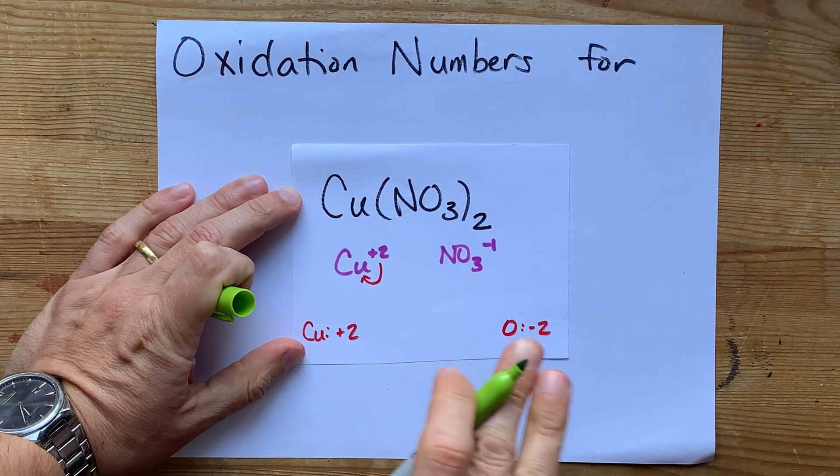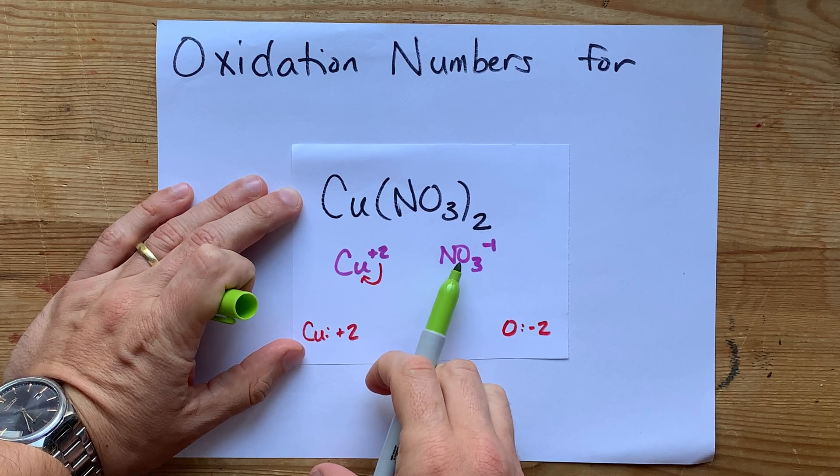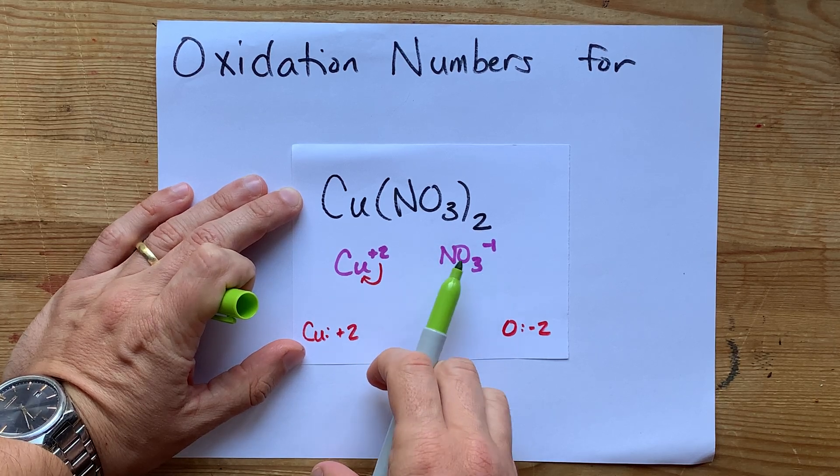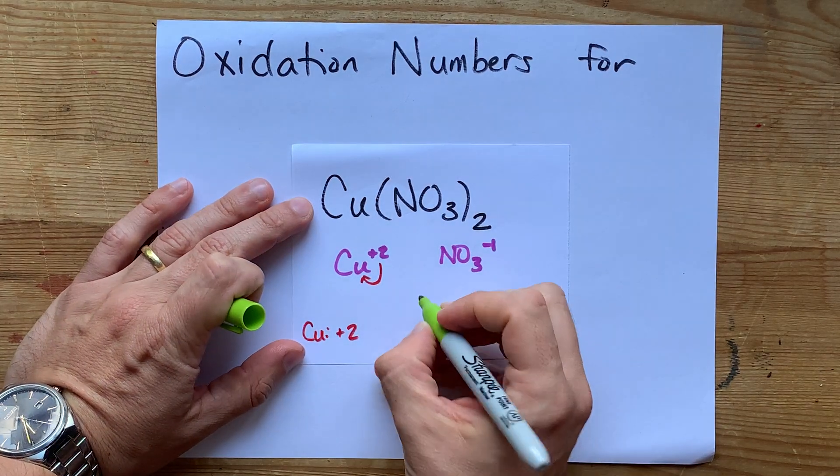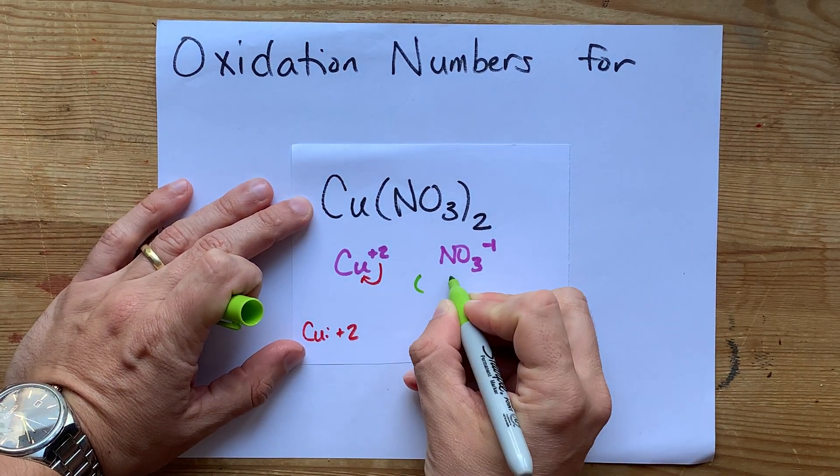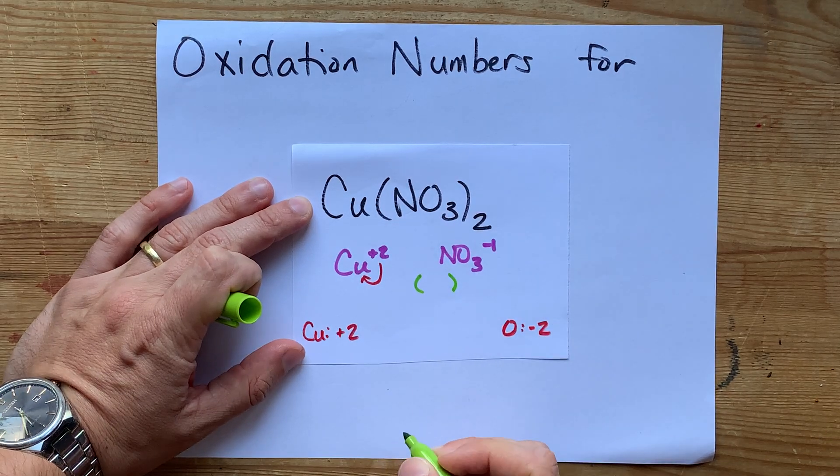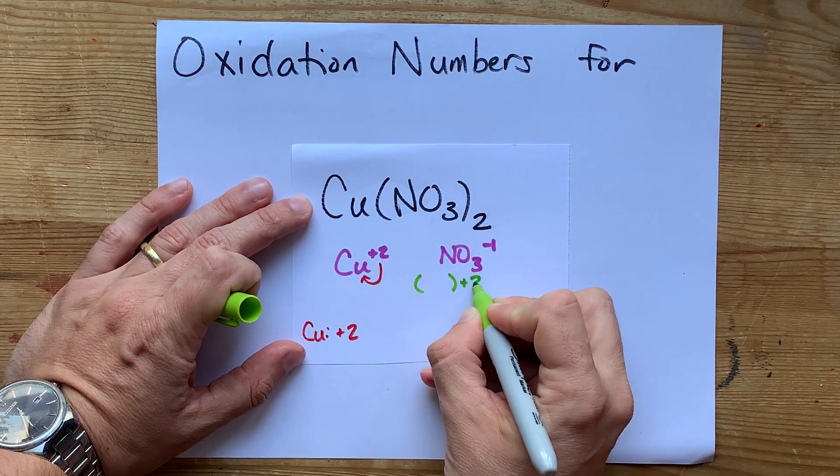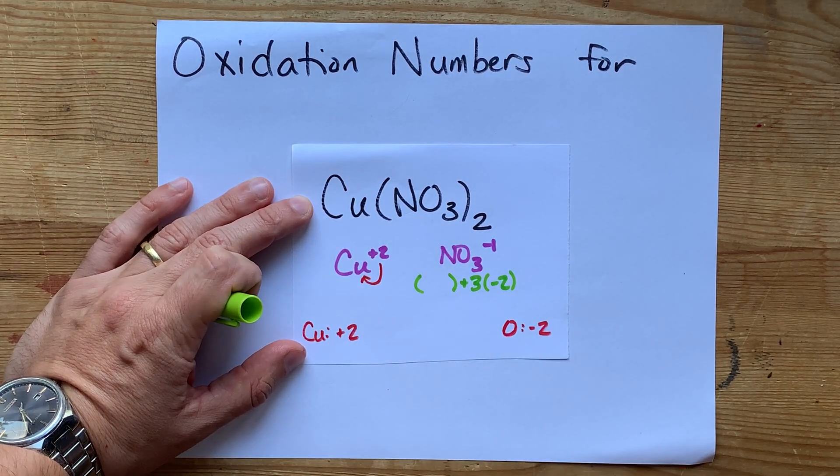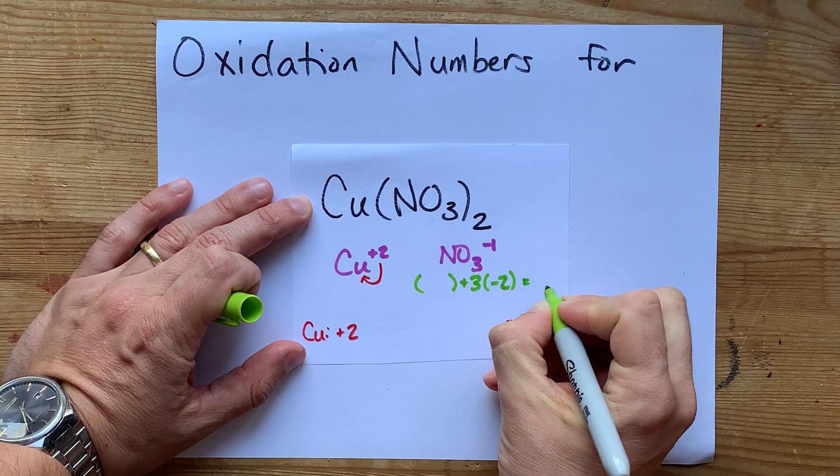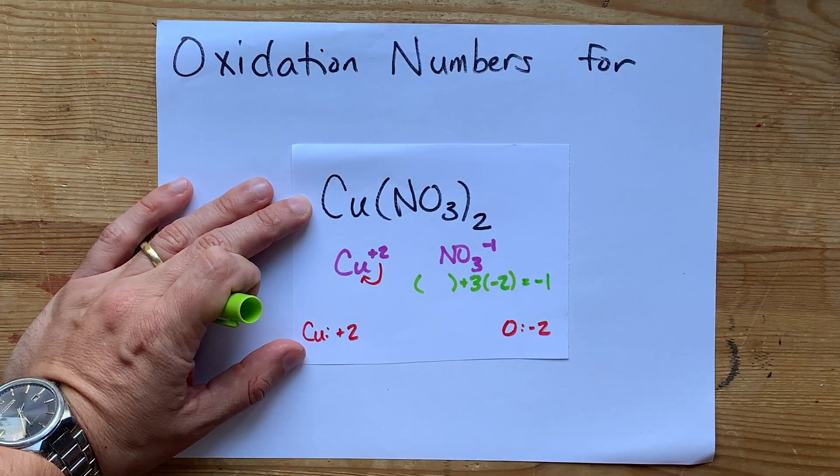The only other thing to know is that the sum of the oxidation numbers in a particle has to equal the total charge on the particle. So, nitrogen's oxidation number, which we do not know yet, added to 3 oxygens, and again, each oxygen is minus 2. We've agreed on that. Combined, all have to equal minus 1.